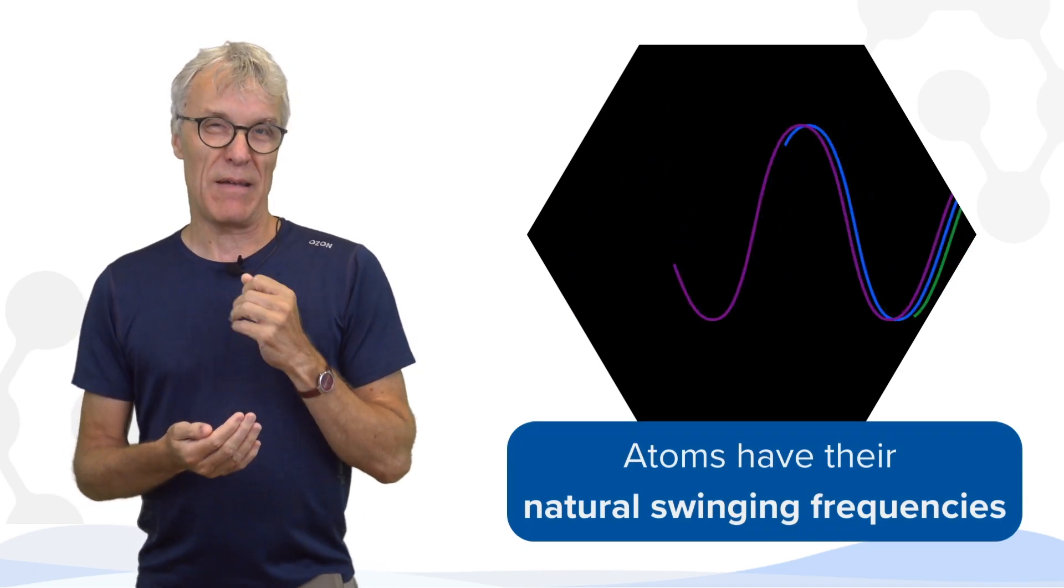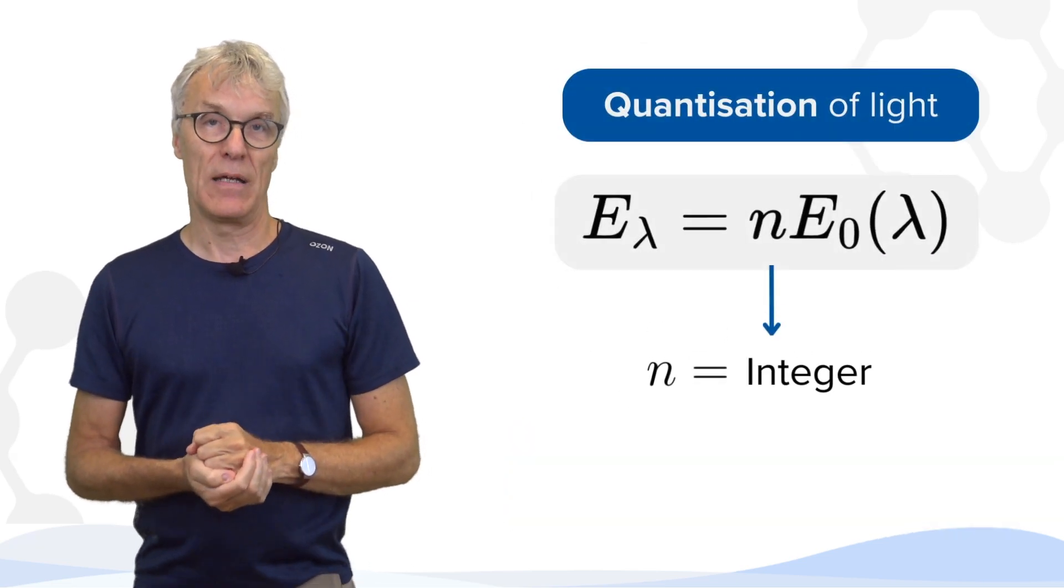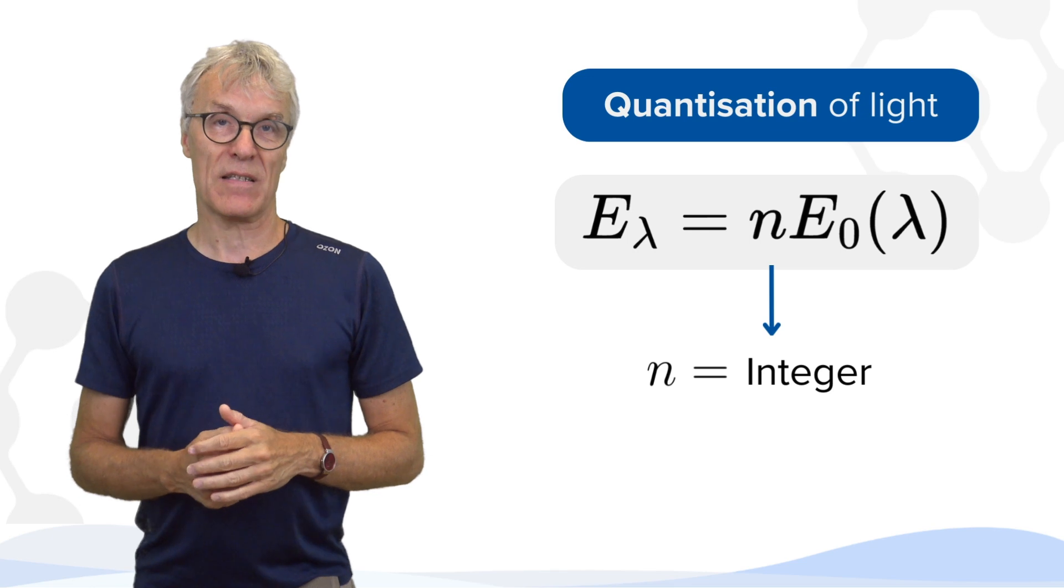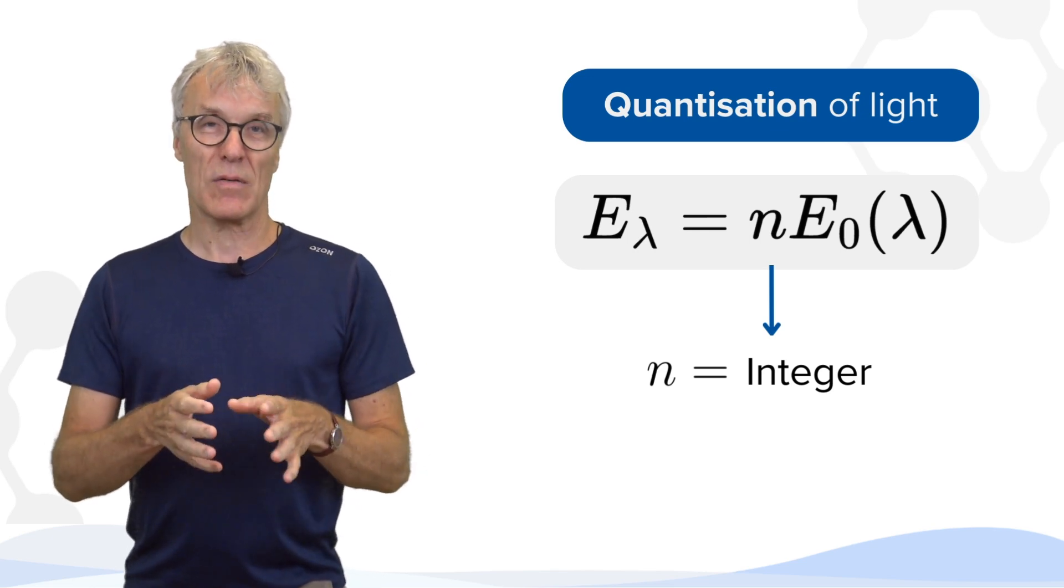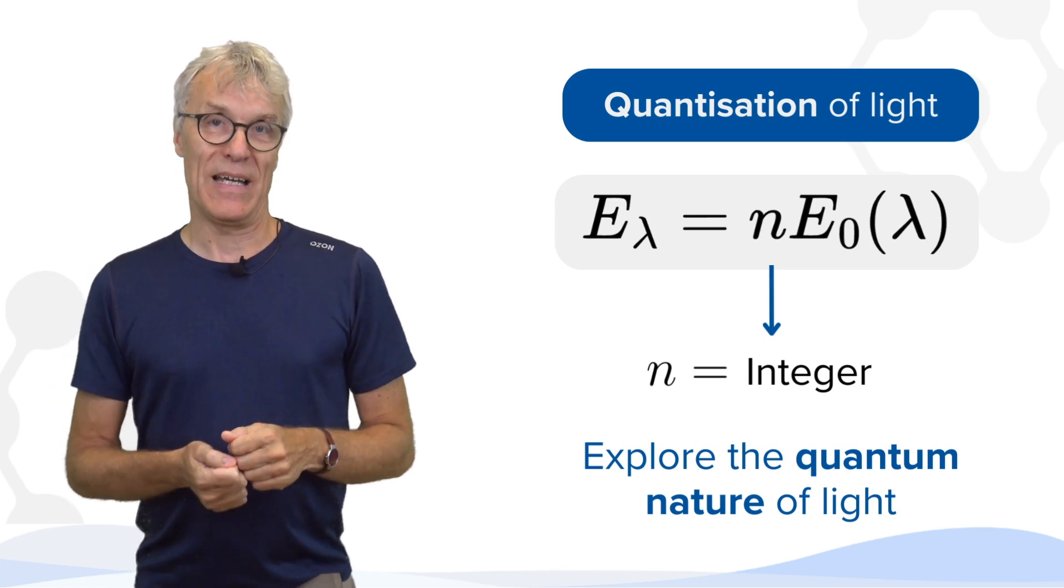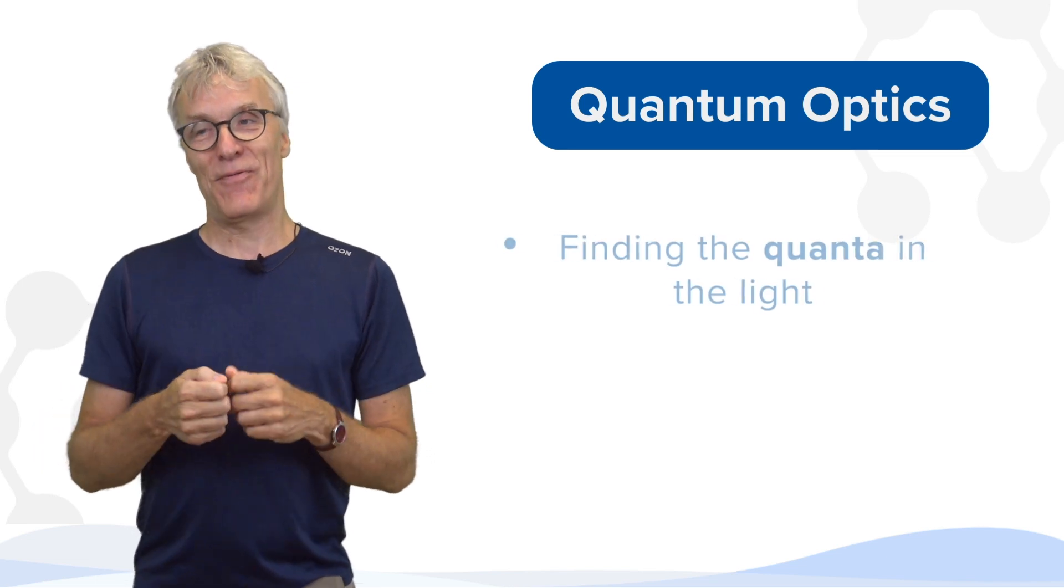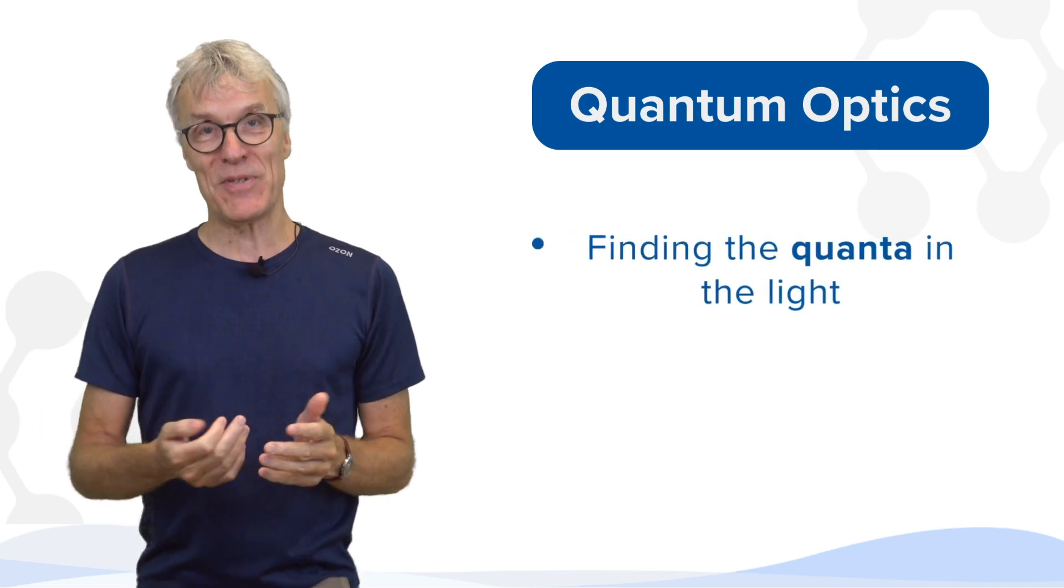But of course, the basic theory contains an element of quantization of light. And it was also one of the early tasks of quantum optics experiments to witness or maybe even explore and exploit this quantum nature of light. So quantum optics was going to the heart of finding the quanta in the light, in the optics.